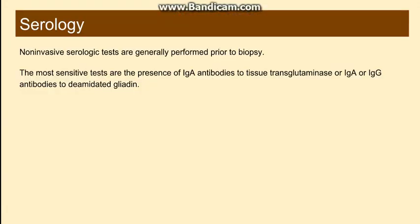Moving to serology: for a patient presenting with celiac disease, serological tests are preferred first because they are non-invasive. The most sensitive tests are IgA antibodies to tissue transglutaminase, or IgA/IgG antibodies to deaminated gliadin. These are the two main important serological tests.